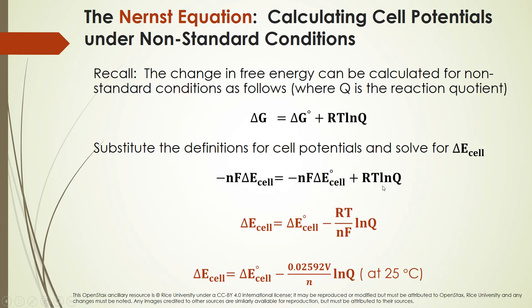When we divide the whole equation by negative NF, the cell potential under non-standard conditions equals the standard cell potential minus the correction term RT over NF times the natural log of Q. Here T is temperature in Kelvin, R is 8.314 J/mol·K, F is Faraday's constant, and N is the number of electrons transferred in the balanced reaction. At 25°C, the constants multiply to give 0.02592 volts divided by N.